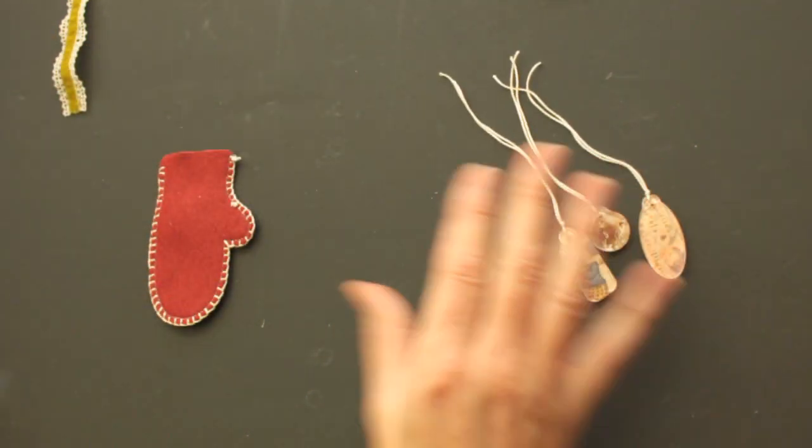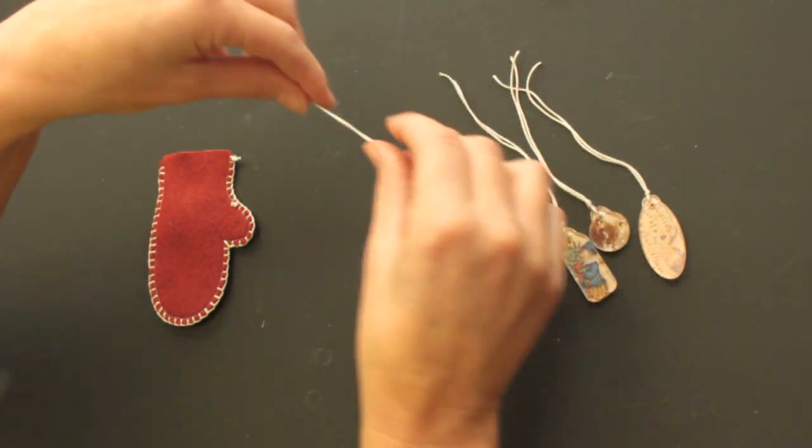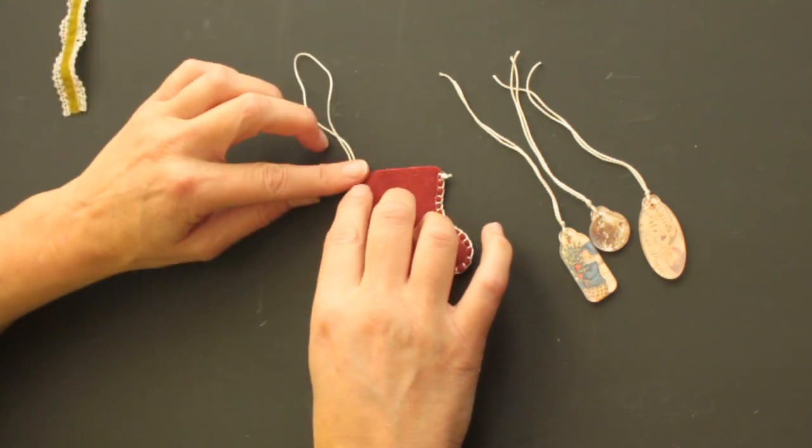And you take another piece of embroidery floss and just tie it together to make a loop for your hanger.